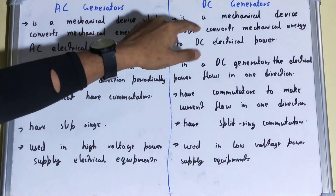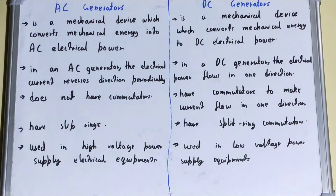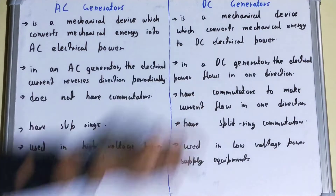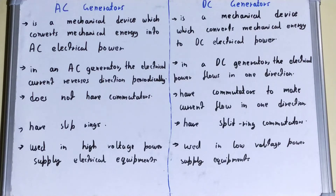In the case of a DC generator, it is a mechanical device which converts mechanical energy to DC electrical power. In other words, DC generators use mechanical energy to produce direct current, or DC current.